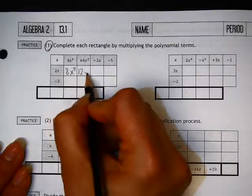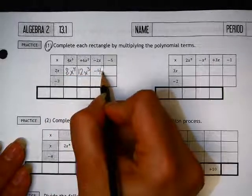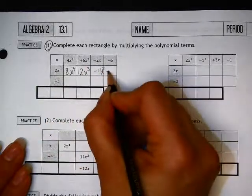6 times 2 is 12, x cubed, negative 4x squared, and negative 10x.